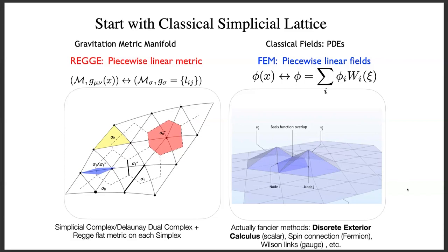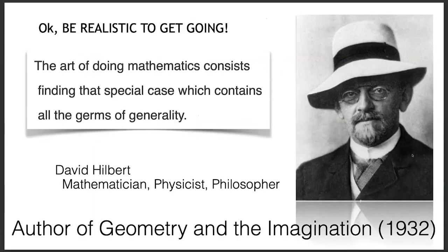Piecewise linear fields on top of piecewise linear geometry is our formulation. There's only one geometry and two piecewise linear approximations: one to the metric, and one to the field. These are both classical notions, both worked out in detail, and the literature — while not easy — is described in our papers.